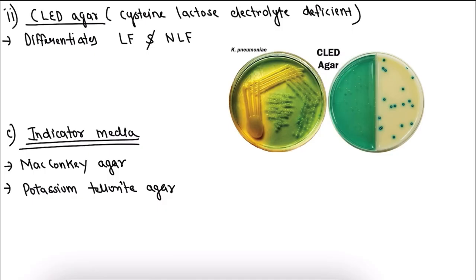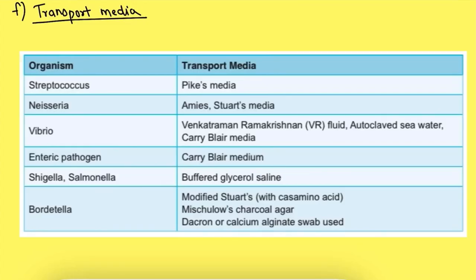The second differential medium is CLED agar, which stands for cysteine lactose electrolyte deficient. It also differentiates between lactose fermenting and non-lactose fermenting bacteria. As we know, MacConkey's agar is also an indicator medium, and potassium tellurite agar is also an indicator medium. Now we are going to study about transport media.